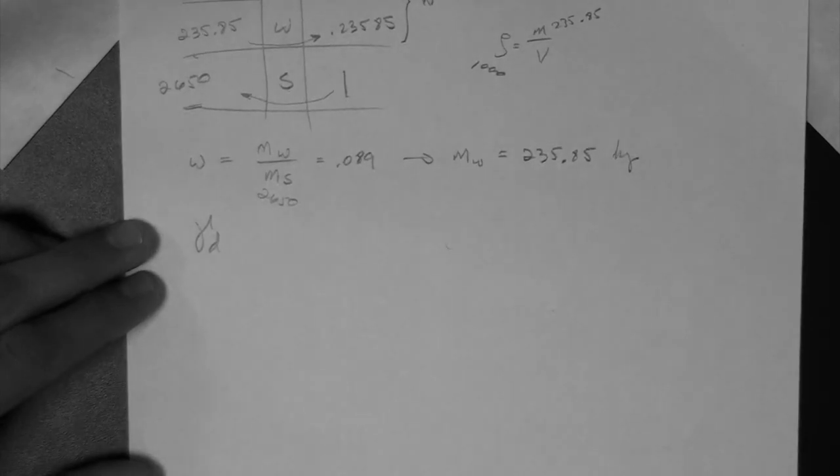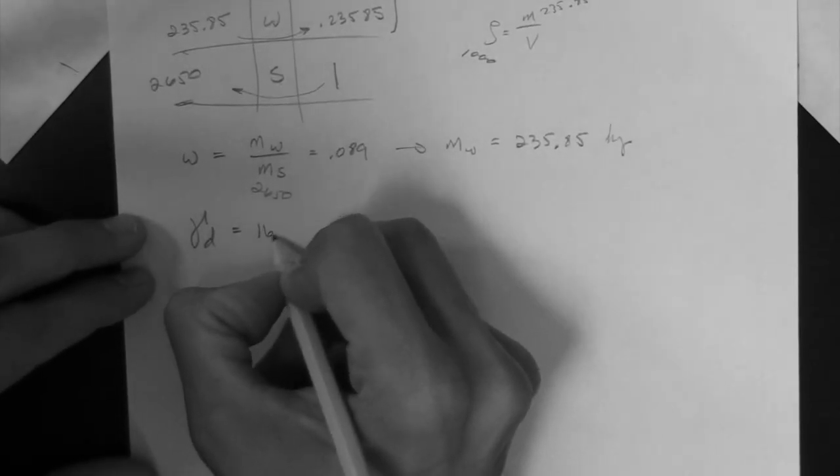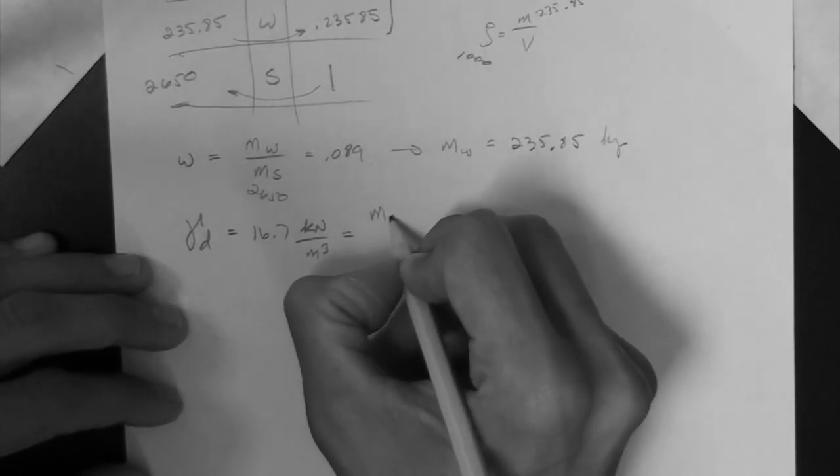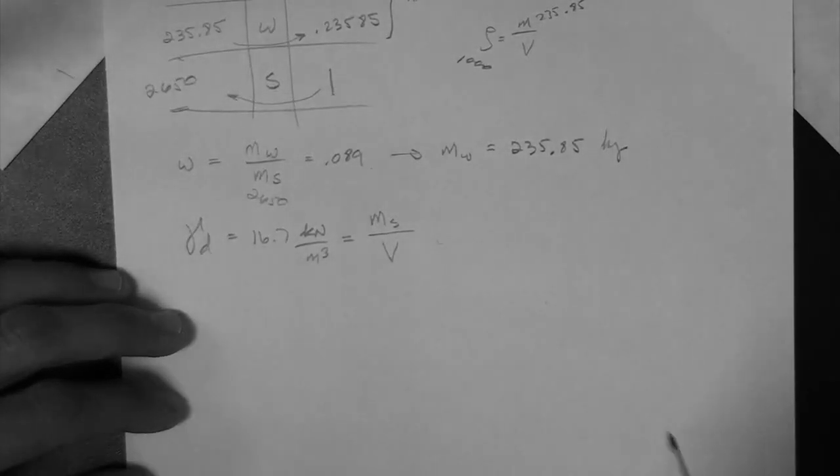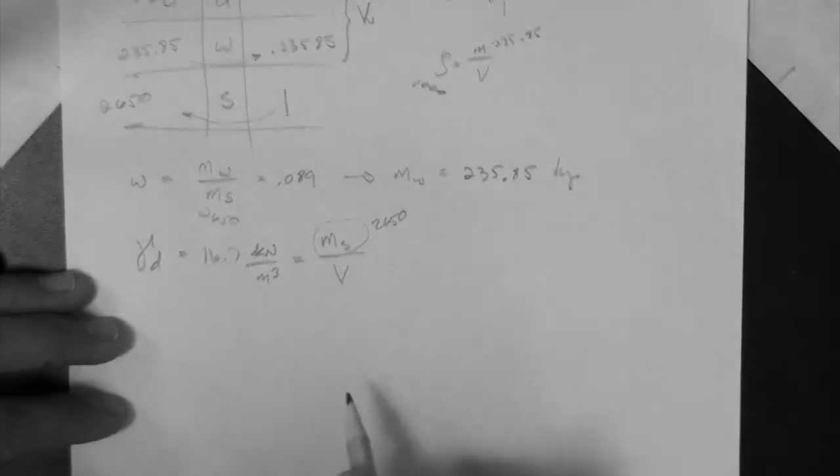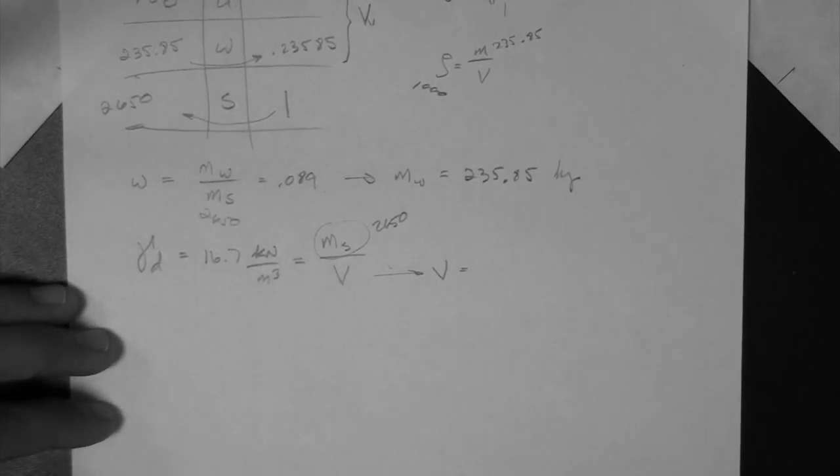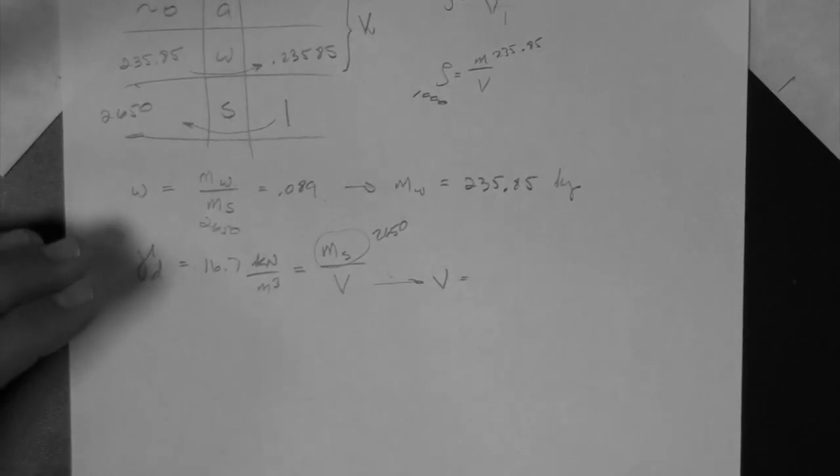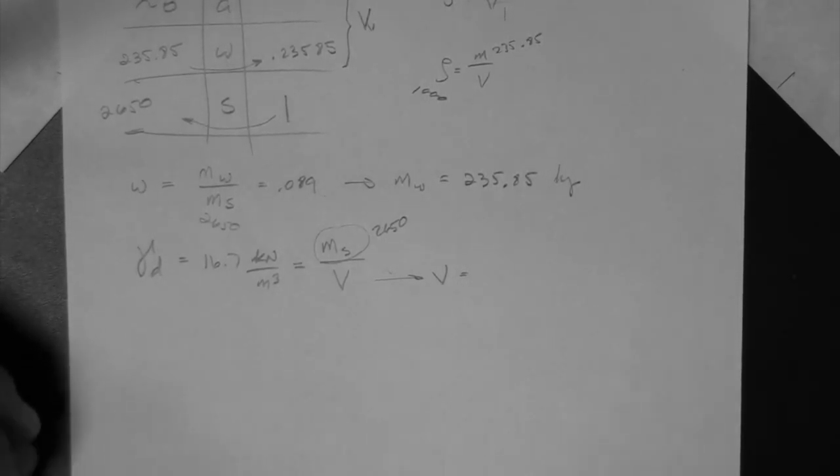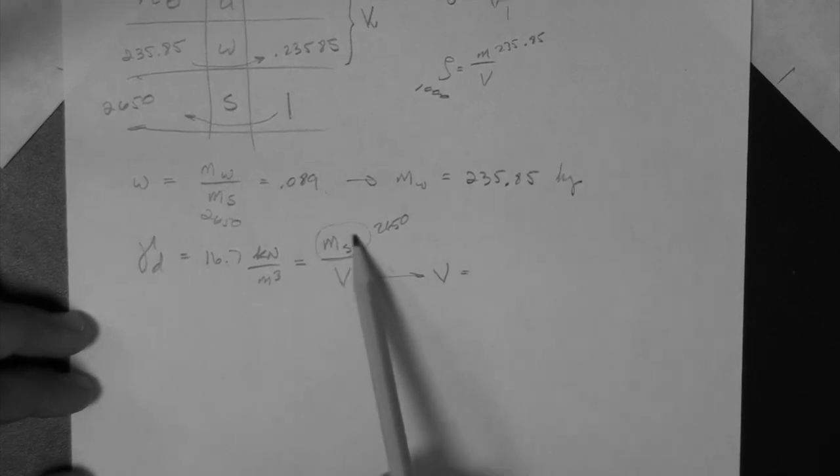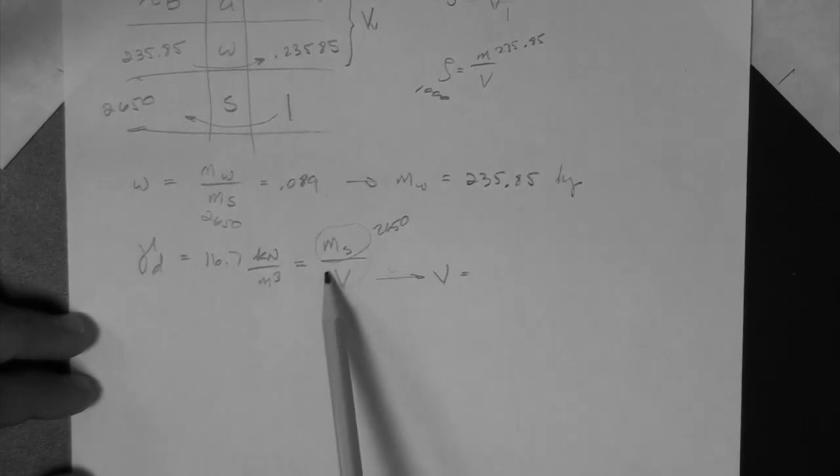The dry unit weight of the soil is 16.7 kN per meter cubed. I'm just rewriting what we know. And the definition is mass of solids over total volume. So notice that we do have the mass of solids, 2650. Which leads to the volume, total volume, being 2650 divided by 16.7. 2650 divided by 16.7. Oh, I made a mistake here. What's the mistake? This is very important because this happens a lot, actually, when we mistake gamma for rho. This is the definition for density, dry density. This is not dry density. This is dry unit weight.